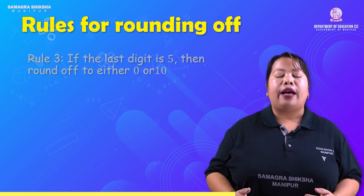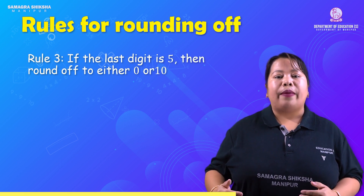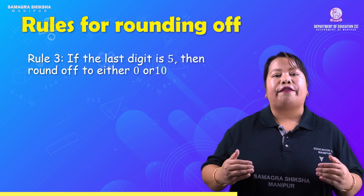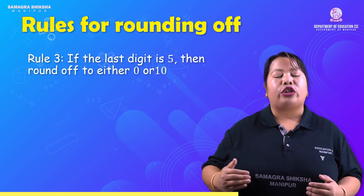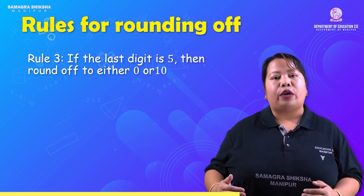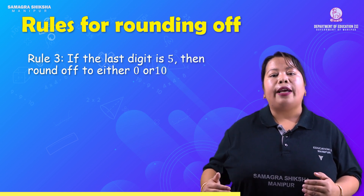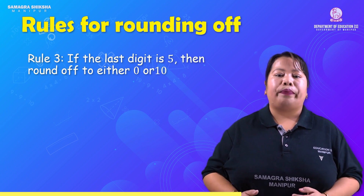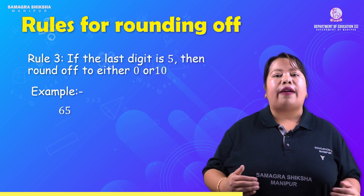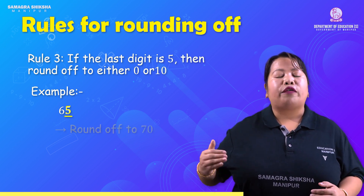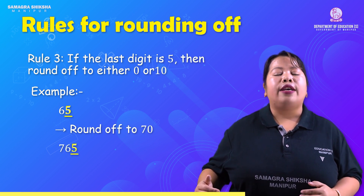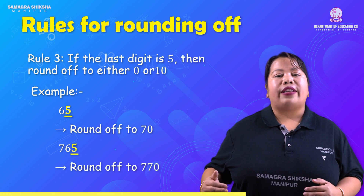Rule 3: if the digit is 5 — if the last digit is 5, we round off to either 0 or 10, but generally we round off to 10. For example, 65: the last digit is 5, so we round it off to 70. Another example: 765 — the last digit is 5, so we round it off to 770.